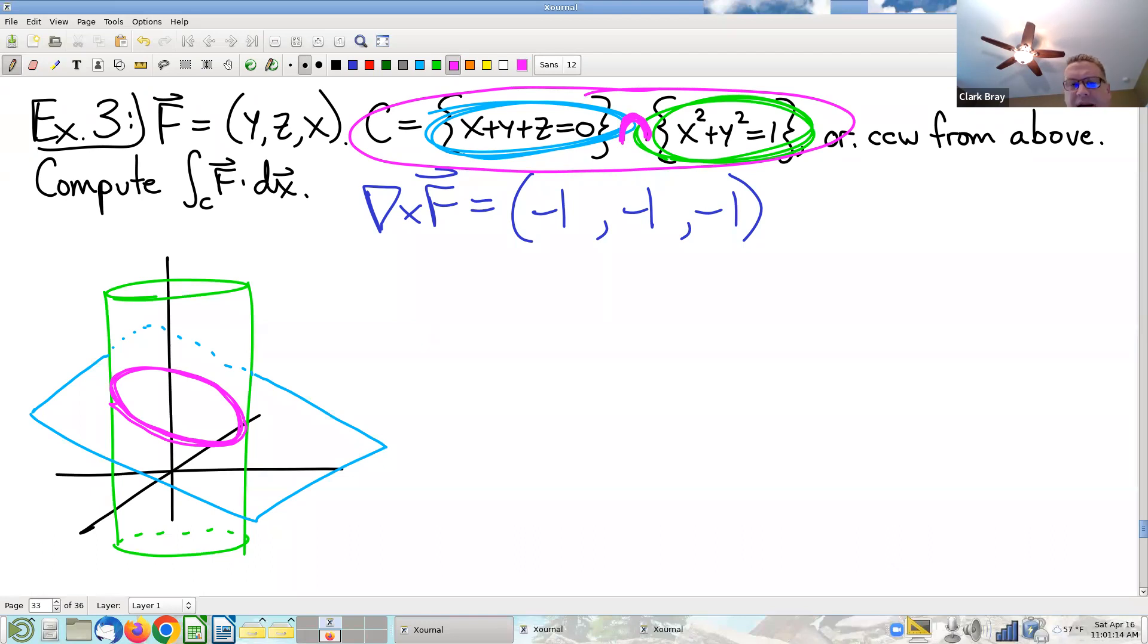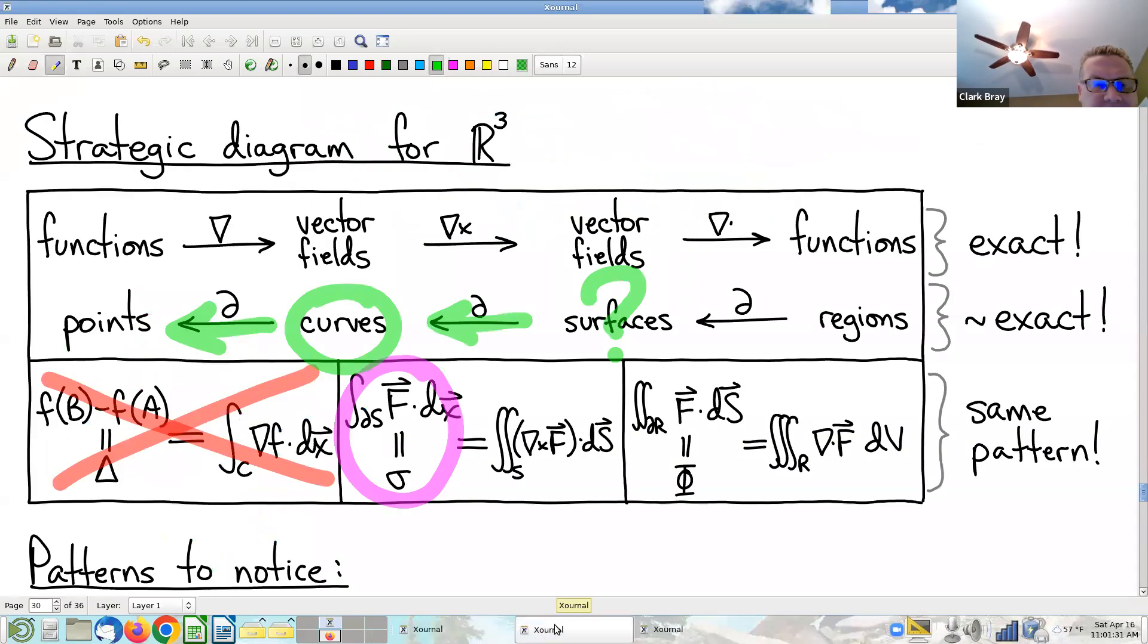The intersection then of these two things, my curve being that intersection is going to be something kind of like that. And is this a boundary? Yeah. It jumps out of the picture at me in this case. This is the boundary of that piece of the plane.